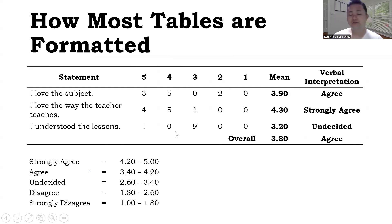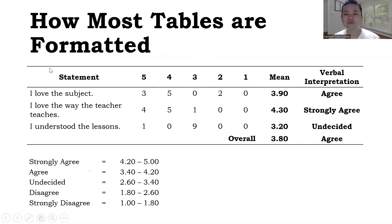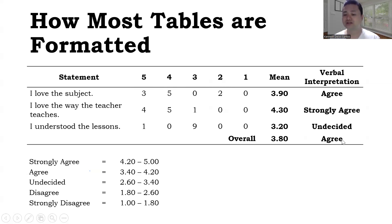Most journals format their Likert scale tables without inner linings — they just have a line on top, a line on the bottom, and a line separating the subheadings. In the verbal interpretation column, you'll typically only see abbreviations like A for agree, SA for strongly agree, U for undecided — and the researcher adds the meaning of those letters at the bottom of the table.